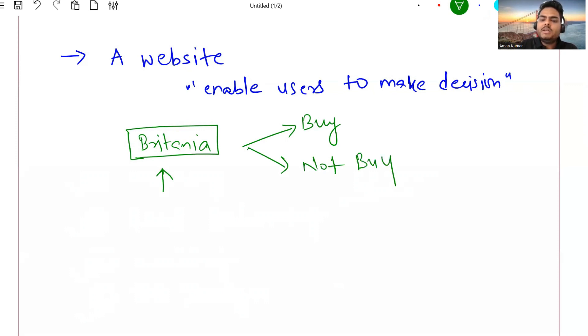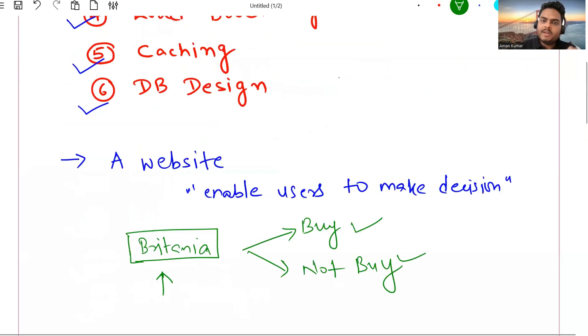This is basically internally a machine learning trained model that takes name of your stock, calls some APIs and gives you the response saying buy or not buy. Just an example I have taken so that I can relate with all those seven steps.